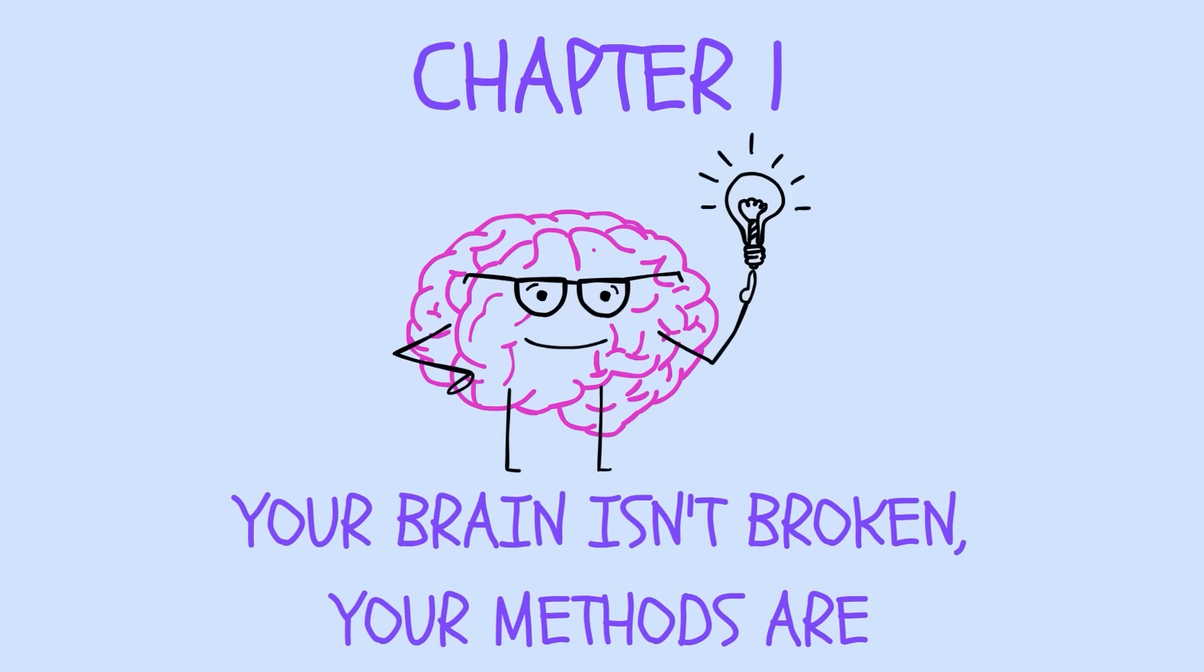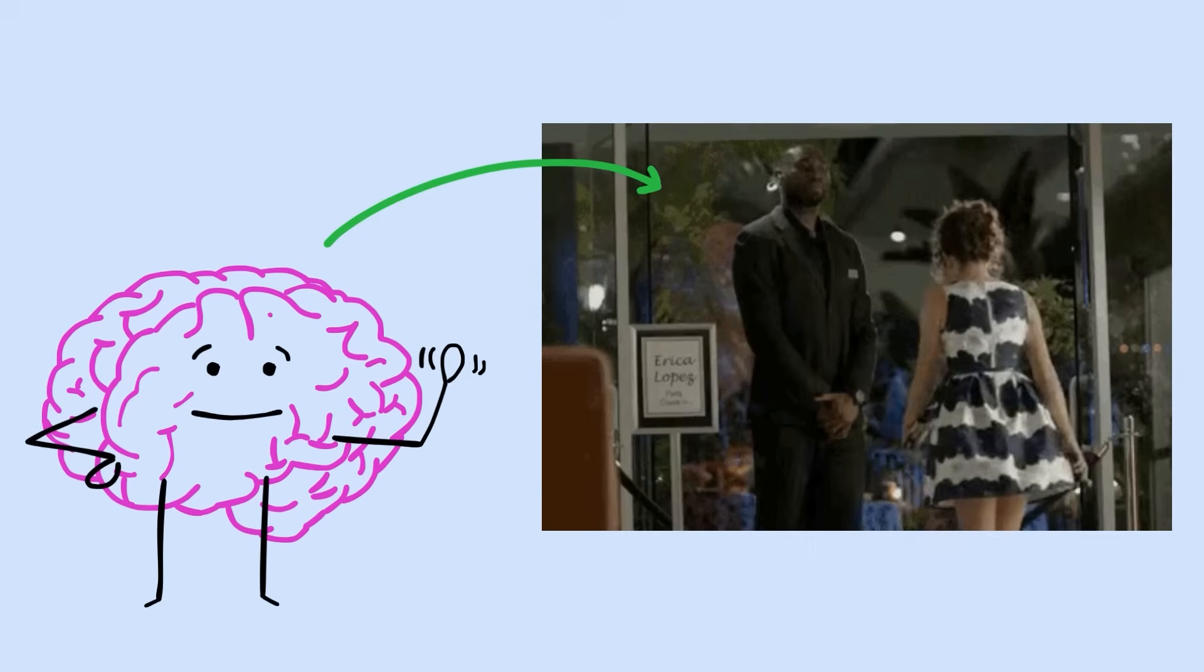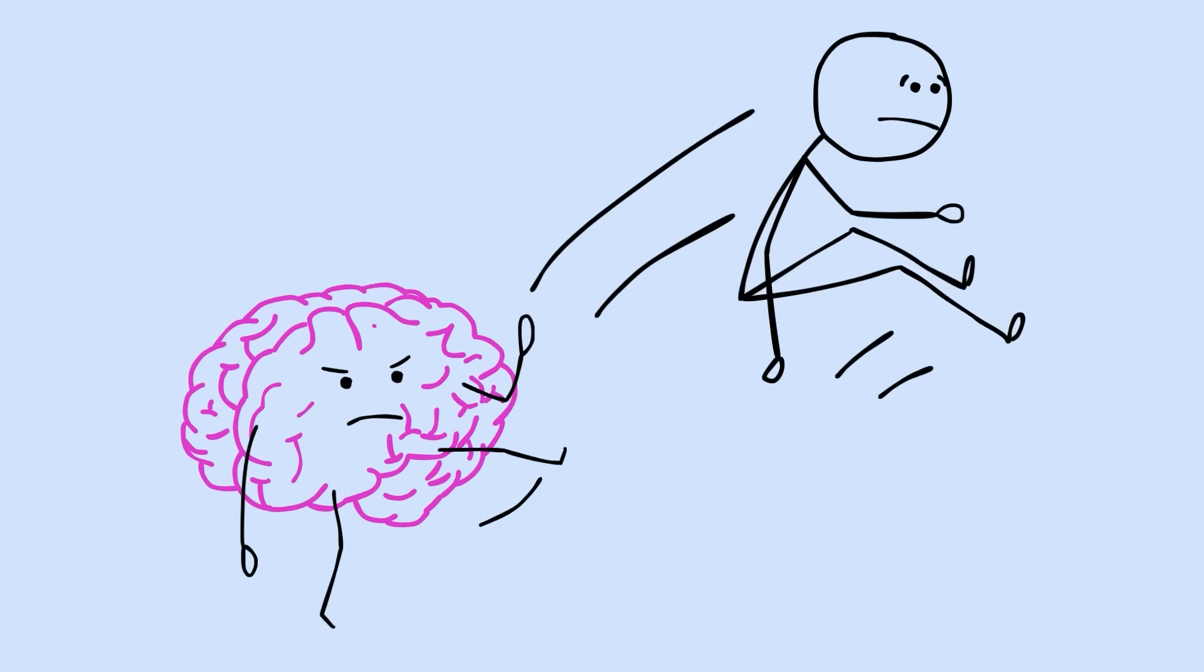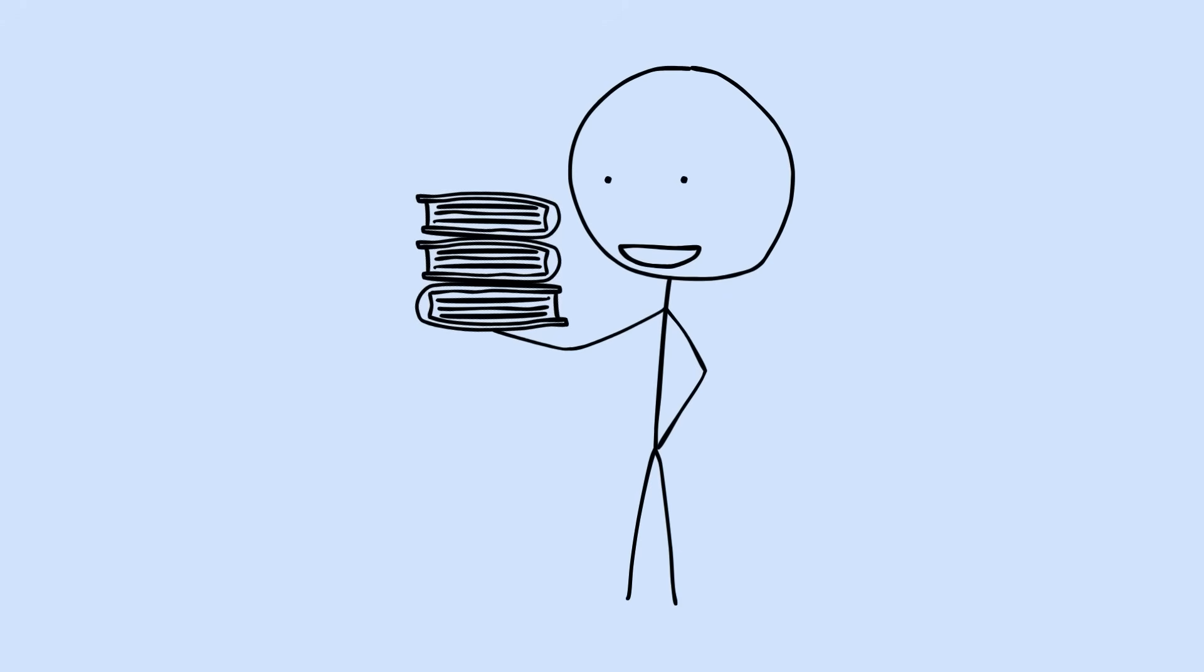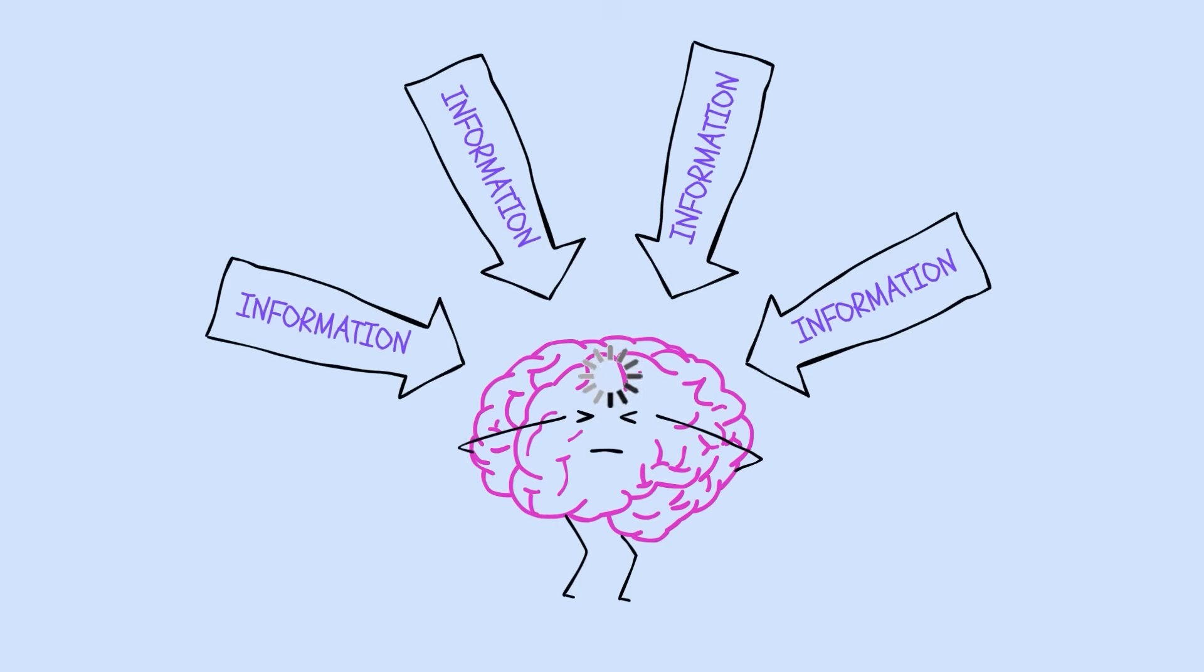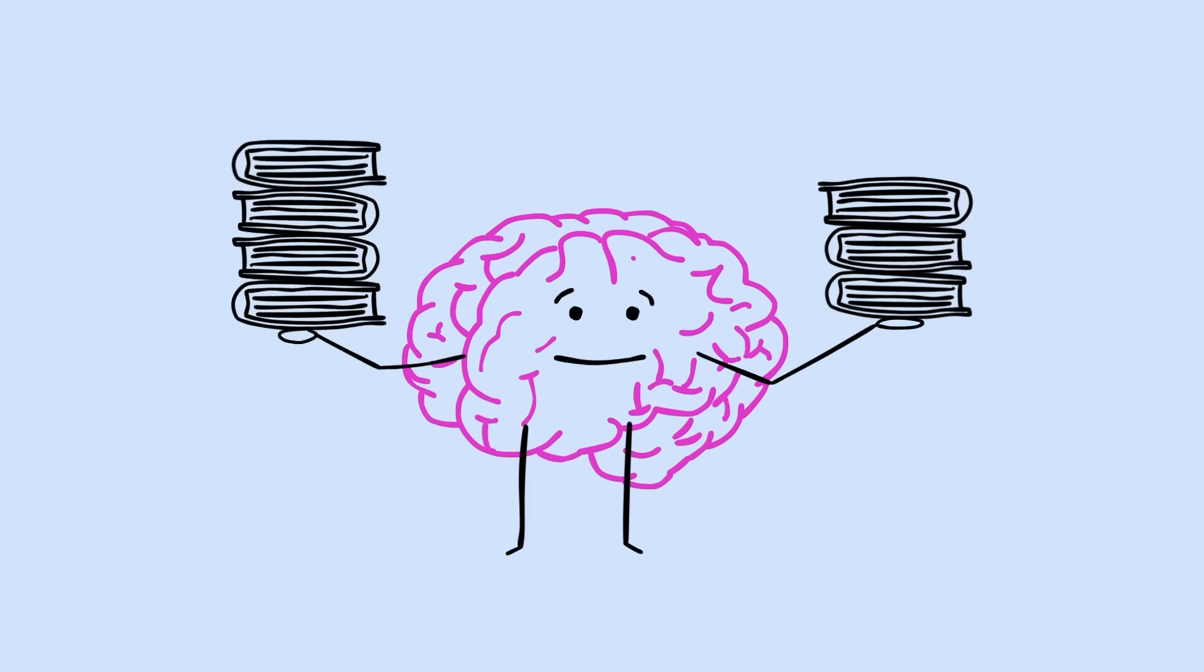Chapter 1. Your brain isn't broken, your methods are. Your brain is like a nightclub bouncer, very selective about who gets in and very quick to kick people out. Here's what the research actually shows. Your working memory, the conscious part of your brain that processes new information, can only handle about seven pieces of information at once. That's it. Seven plus or minus two.